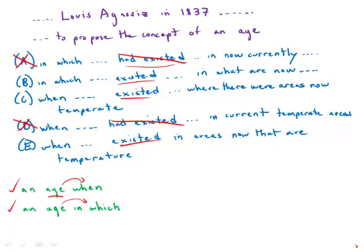That leaves answers B, C, and E. In C, we have the phrase 'where there were areas now temperate' — a gigantic train wreck, really wordy and indirect. In general, using 'there were' is almost always a more indirect way to say something, so we'll eliminate C. In E, we have an equally awkward construction: 'in areas now that are temperate.' Part of the reason it feels funny is that the adverb 'now' modifies the verb 'are' and should be next to it. If we move it to 'in areas that are now temperate,' that would be much smoother. Having 'now' offset and not touching the verb it's modifying gives it an awkward feel.